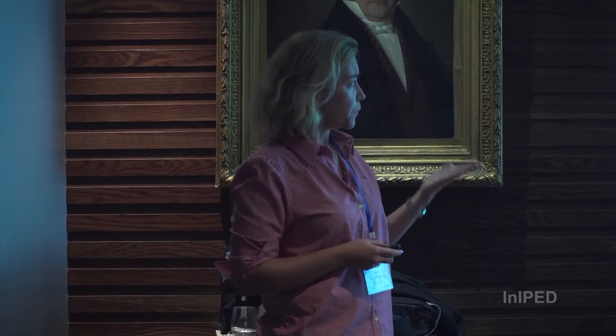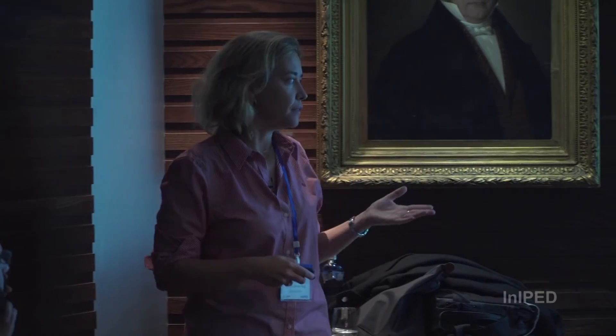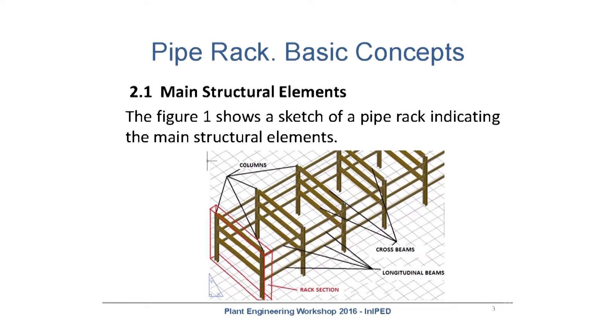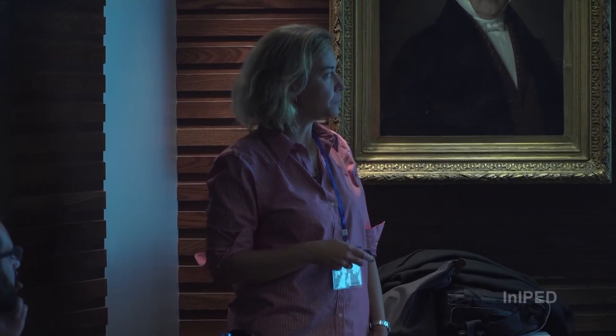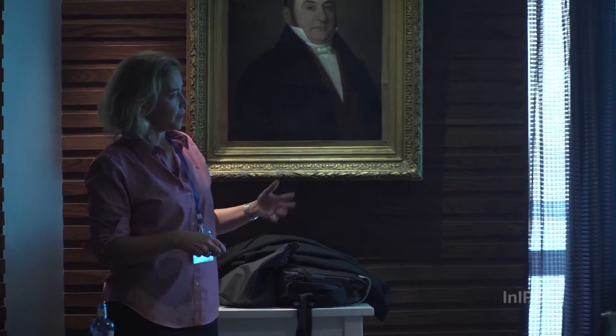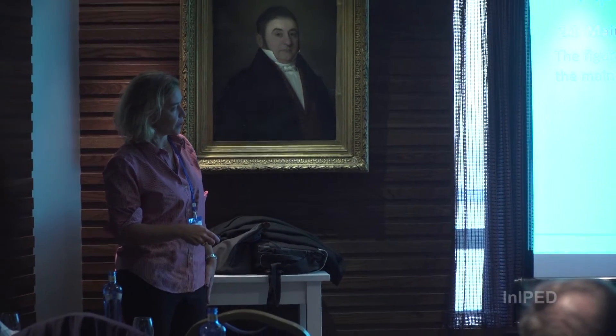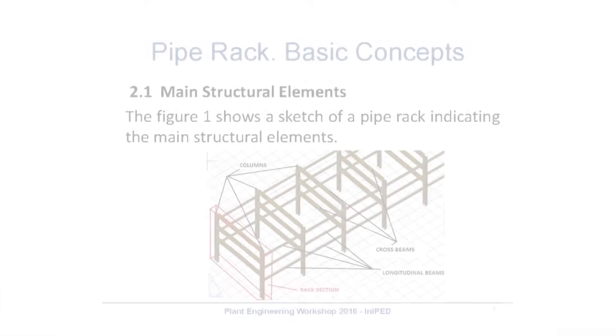Also, because it's a big structure, a unit doesn't need only pipe — it also needs cables. So the racks are also used to put the trays with instrument and electrical cables. Normally, the structure of a rack is like this. We have the rack section, the longitudinal beams, the cross beams, and the columns. Normally this is the trays area. This is the first level, the second level, the third level. The amount of levels depends on the size of the unit.